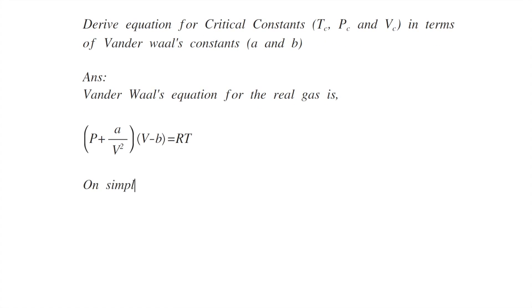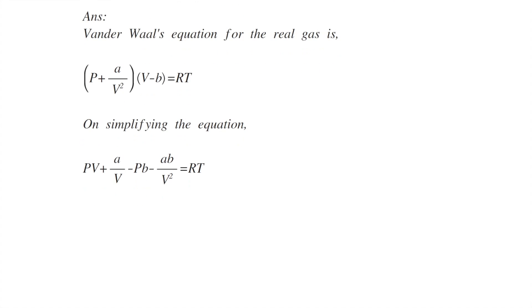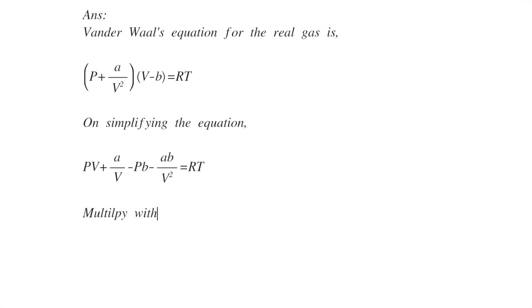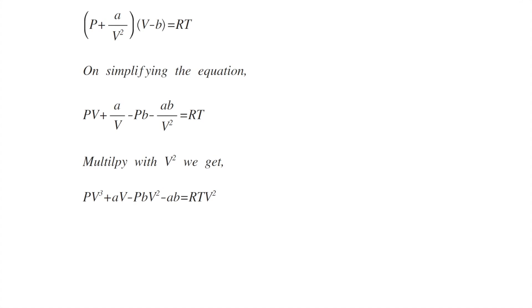On simplifying the equation we get pv + a/v - pb - ab/v² = RT. Now multiplying by v² we get pv³ + av - pbv² - ab = RTv².